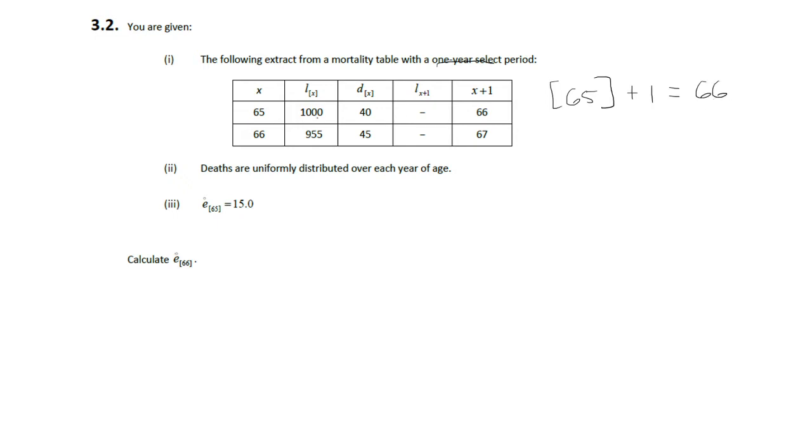At age 65 there's 1000 people, 40 of them die so that leaves 960 of them the next year. At age 66 there's 955 people, 45 die so that leaves 910.